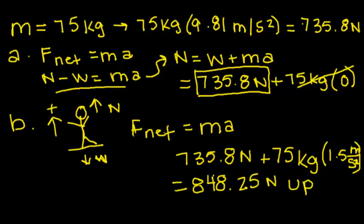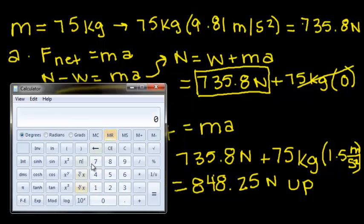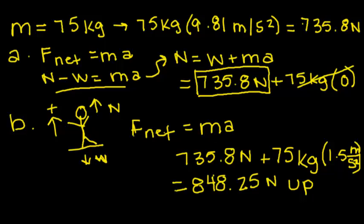To check this, we'll show on the calculator. We do 75 kilograms times 1.5 meters per second squared, and we're going to add that to 735.8 newtons. You get 848.3, which is rounded up from 848.25 newtons up, and that's problem 4.1.